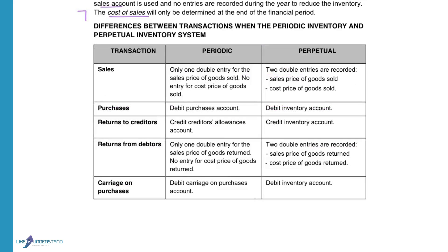Looking at the differences between transactions in both systems: when goods are sold in the perpetual system, we do two double entries — one at sales price, debiting debtors or bank and crediting sales, and a second at cost price, debiting cost of sales and crediting inventory. In the periodic system, only one double entry is recorded for the sale; no entry is recorded for cost of sales.